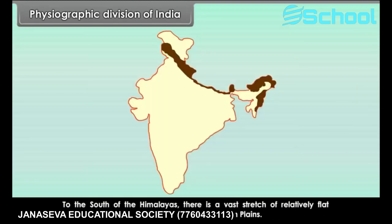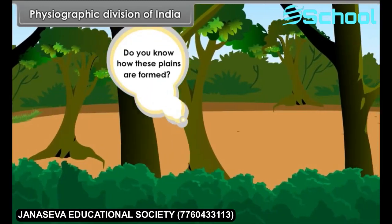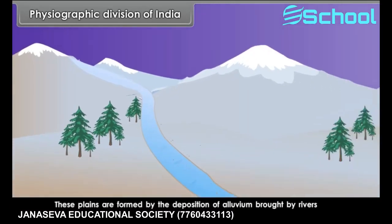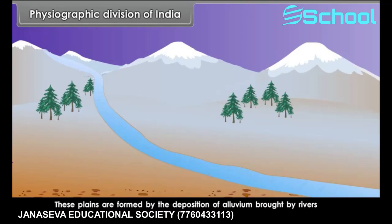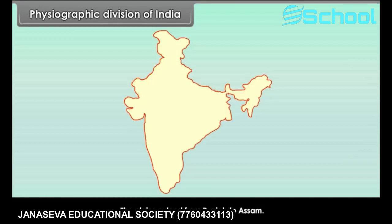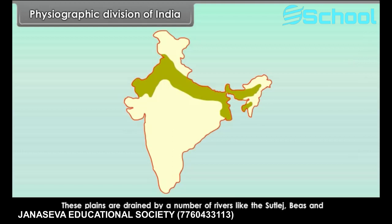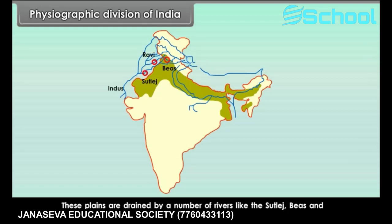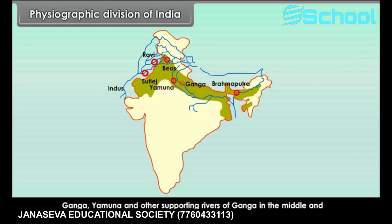To the south of the Himalayas, there is a vast stretch of relatively flat surface called the Northern Plains or Great Indian Plains. These plains are formed by the deposition of alluvium brought by rivers flowing from the Himalayas. The plains extend from Punjab to Assam and are drained by rivers like the Sutlej, Beas, and Ravi on the west; Ganga, Yamuna, and other tributaries in the middle; and Brahmaputra and its tributaries in the east.